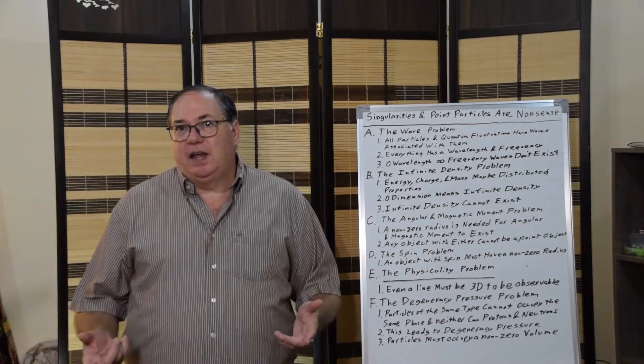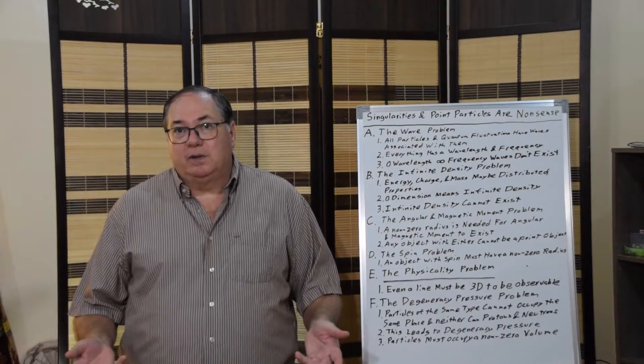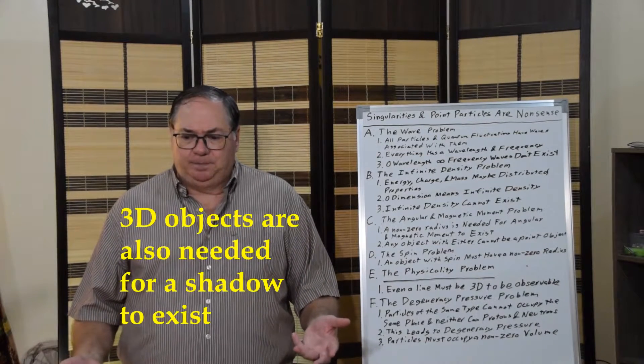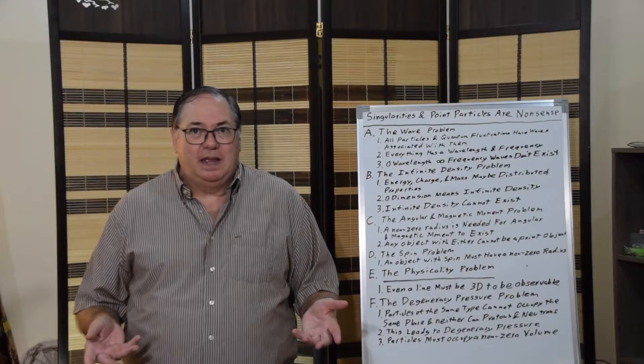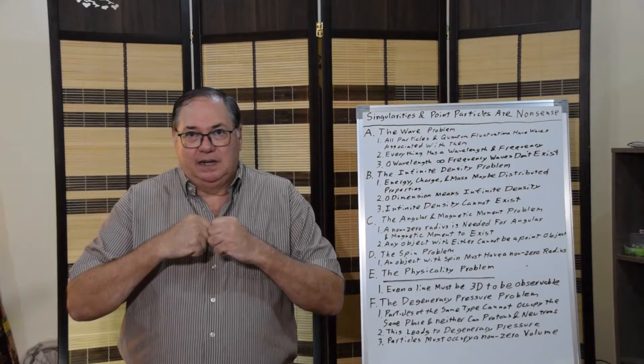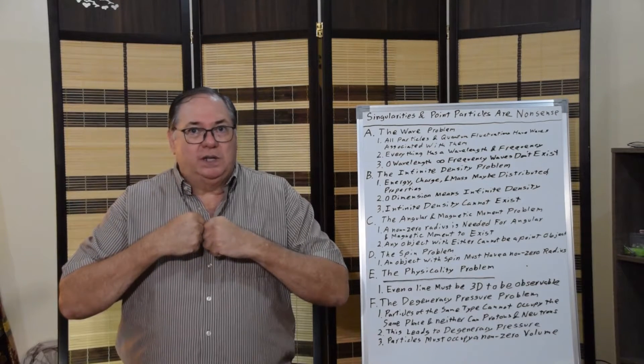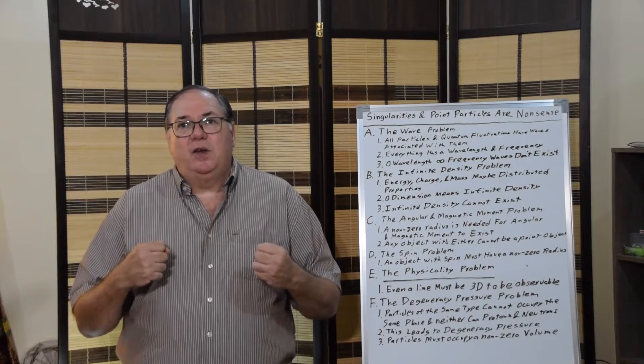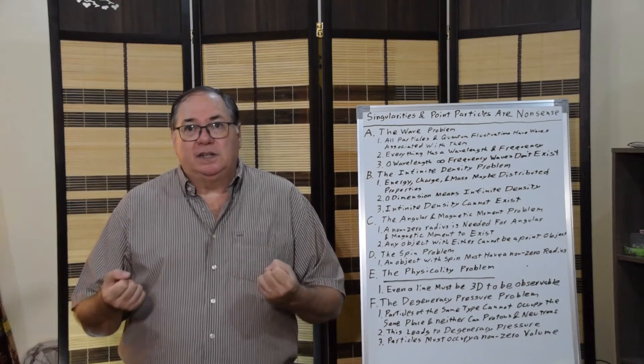So any physically real object is going to be a non-singularity or non-point particle. It's going to have some real radius, some real three-dimensional dimensions. And then we have the degeneracy pressure problem. Two particles can't occupy the same state, including the same position. So if you have two electrons, they exert pressure against each other, which is called degeneracy pressure. This is related to the Pauli exclusion principle.